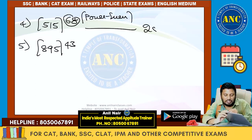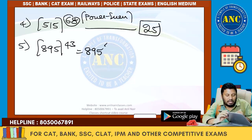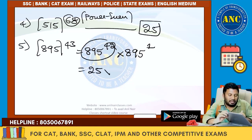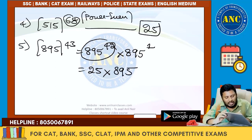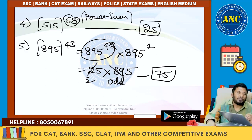If the power is an even number, the last two digits is always 25. For an odd power, split it: 895^43 = 895^42 × 895. 895^42 – power is even, so last two digits is 25. Then 25 × 895: 2 is even, 89 is odd. Even 5 into odd 5 – last two digits is 75.